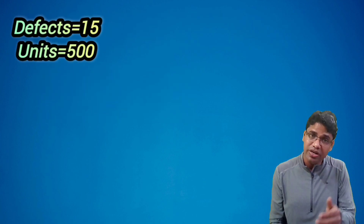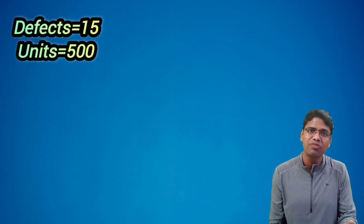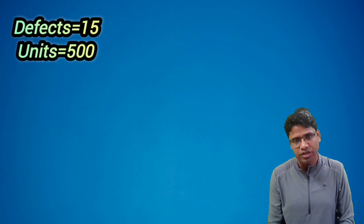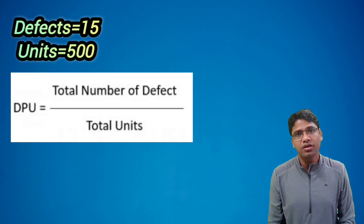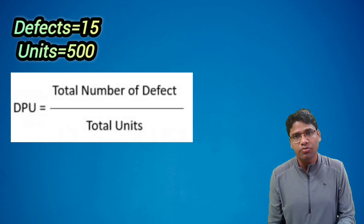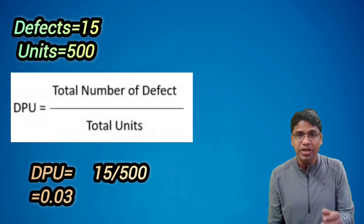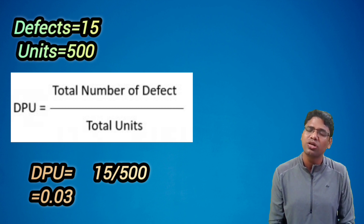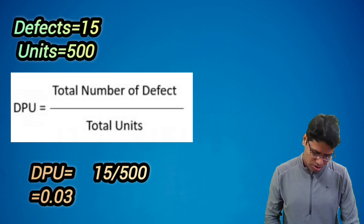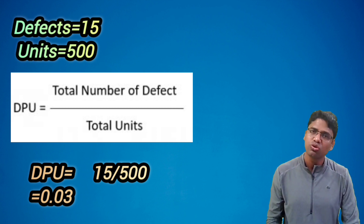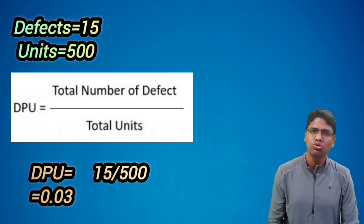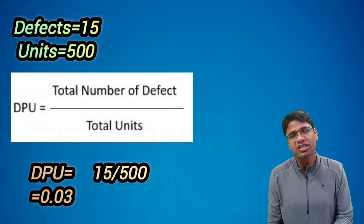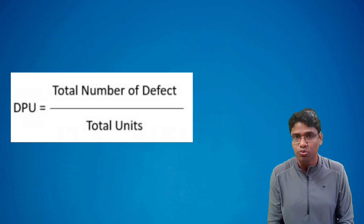Suppose there are 15 defects in 500 units. We divide 15 by 500, which equals 0.03. So the DPU is 0.03.